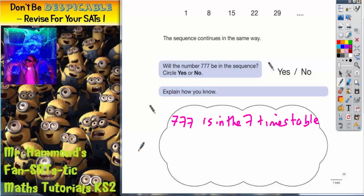And if you're not sure, just do a quick check. 7s into 7 goes once, 7s into 7 goes once, 7s into 7 goes once. So it's got to be in the 7 times table because it's 7 lots of 111.